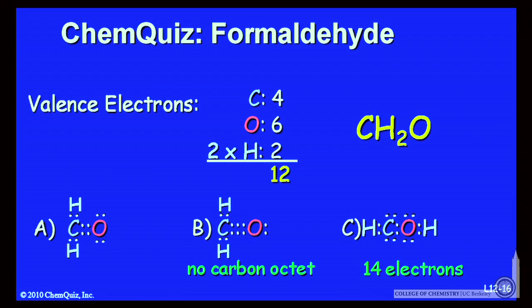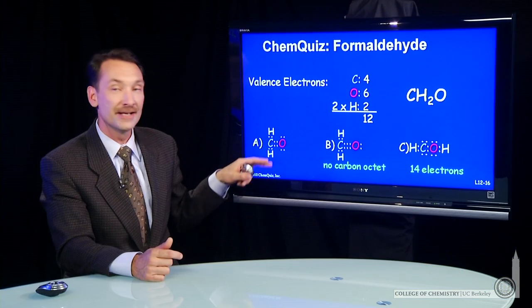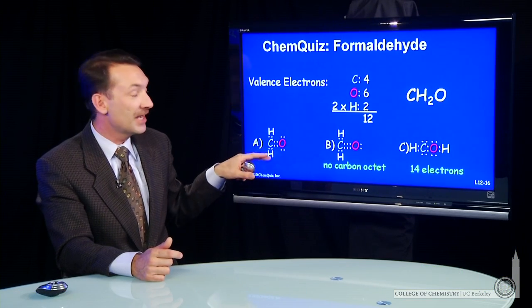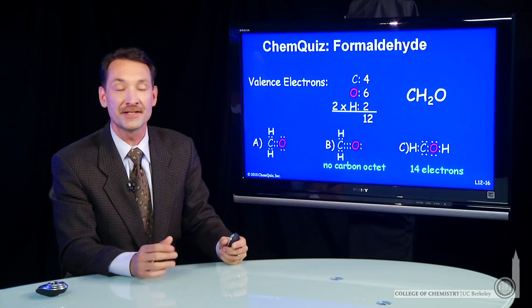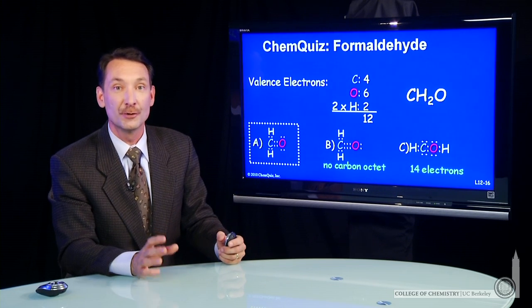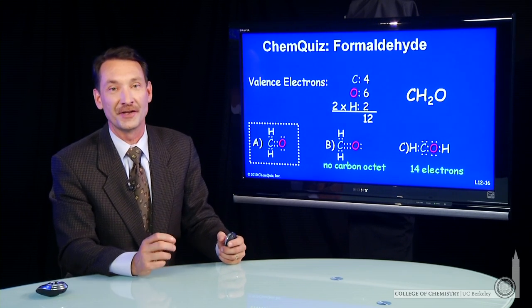Oxygen has 2, 4, 6, 8, an octet. And each hydrogen has 2 electrons around it, which satisfies hydrogen. So A is the proper Lewis electron dot structure for formaldehyde.